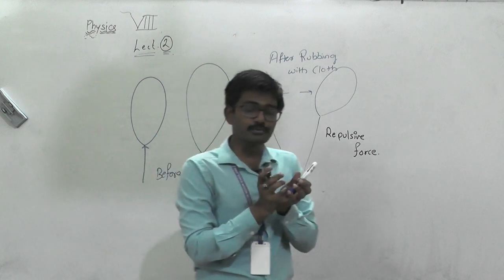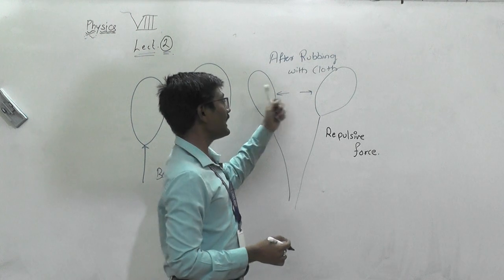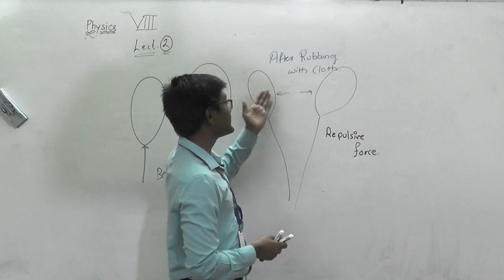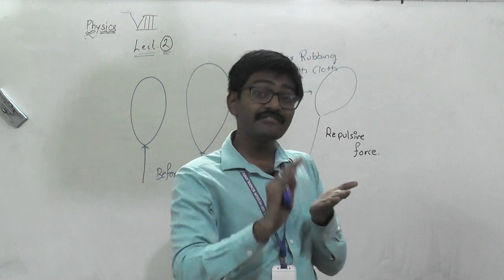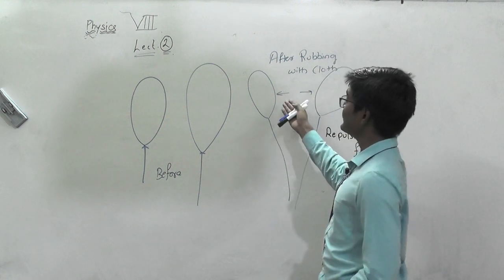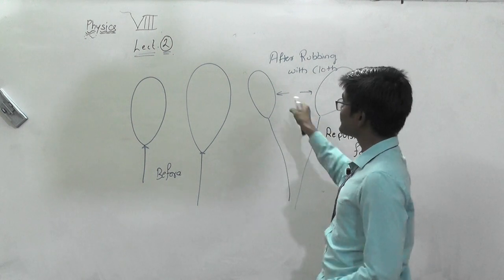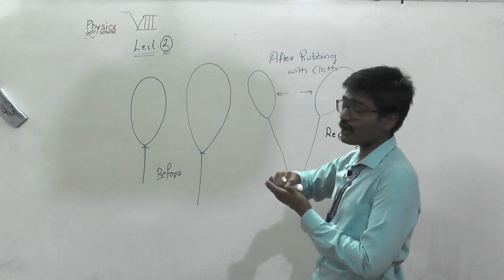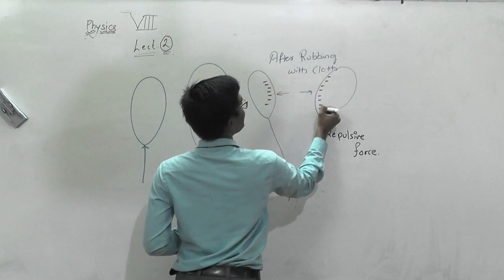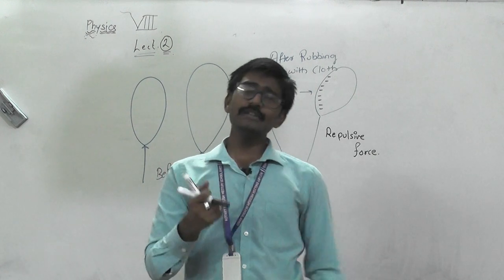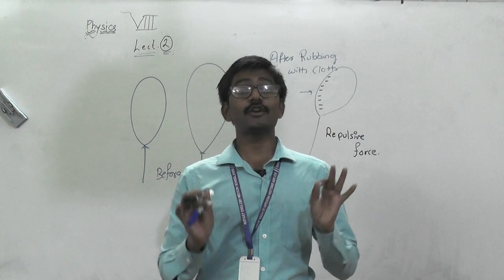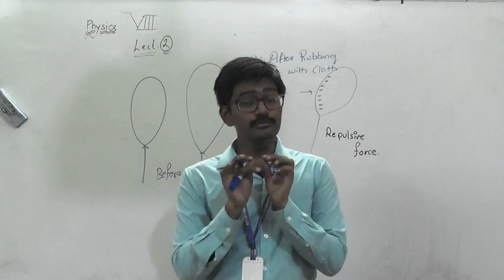Why do they move away? This force is called a repulsive force. Both balloons were rubbed with the same cloth, so there is a change in the number of electrons on each. When you rub the balloon, electrons from the cloth jump over to the balloon. Electrons from the cloth jump upon both balloons — so both become negatively charged. Two negative charges, when brought closer to each other, cannot remain steady.